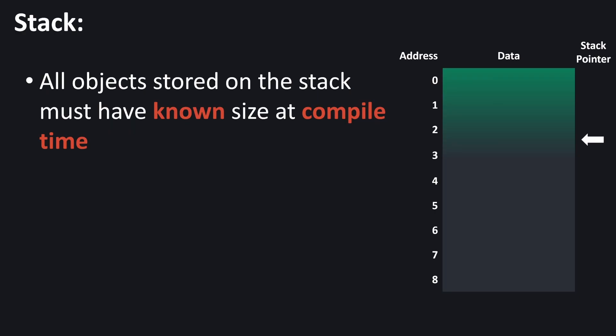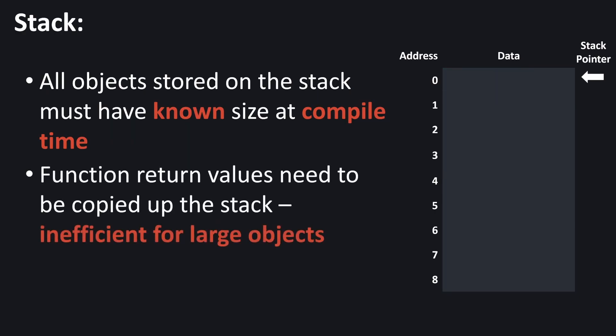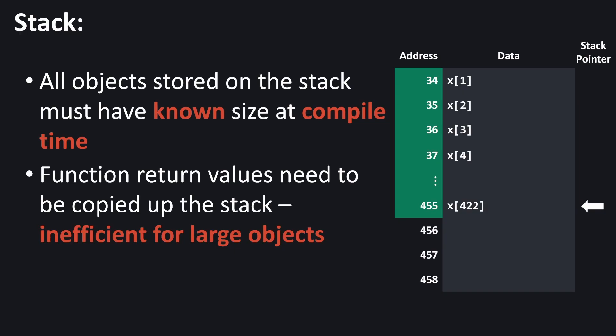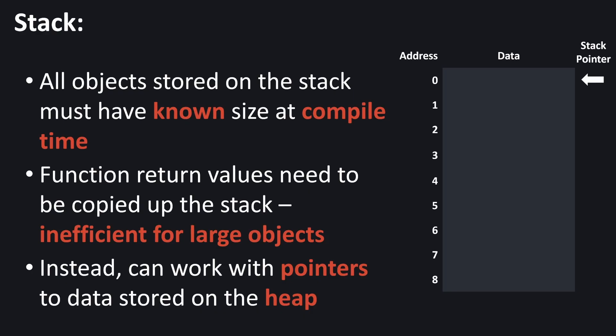The amount we move the stack pointer is usually encoded directly inside the executing instructions. The second restriction is that function return values need to be copied up the stack, which can be very inefficient for large objects. Imagine a function that creates a very large array with some local variables — to return that array, we can't just move the stack pointer; we have to copy all the array values up the stack. Copying large arrays can be quite inefficient, so it's generally not ideal to store large values on the stack. Instead we usually work with pointers to data stored in a different location — specifically, the heap.